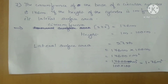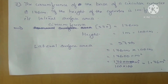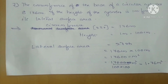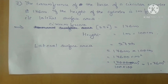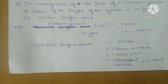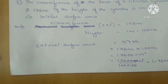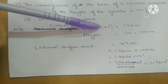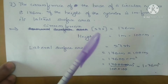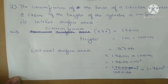The circumference of the base of a circular cylinder is 176 cm. If the height of the cylinder is 1 meter, find the lateral surface area. So, first we are writing whatever is given in the question. Circumference is given, circumference equals 176 — that means 2πr is given as 176 — and height is given as 1 meter.